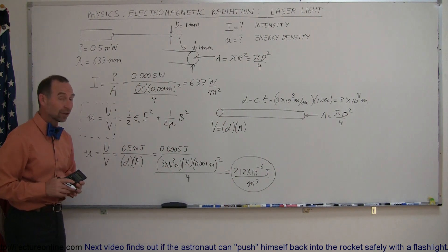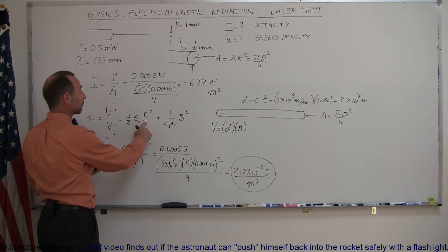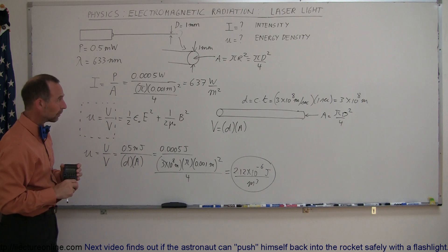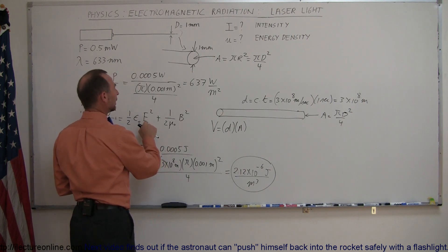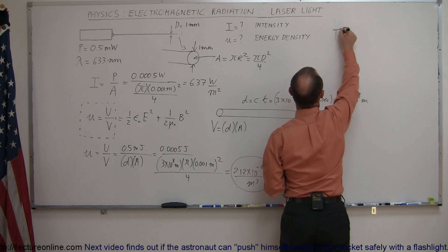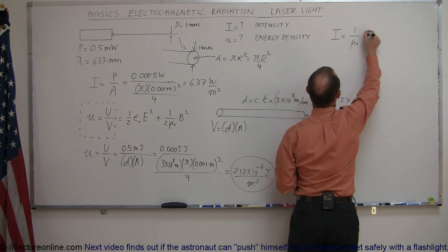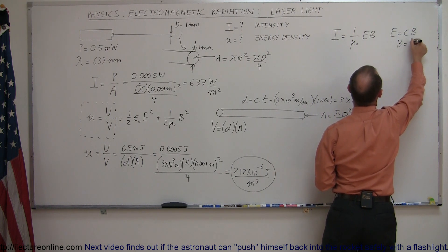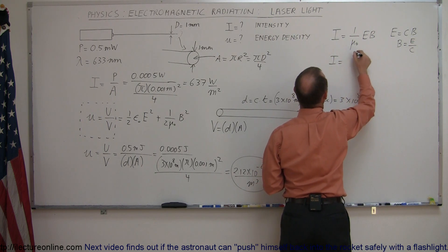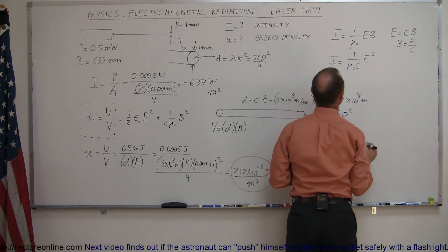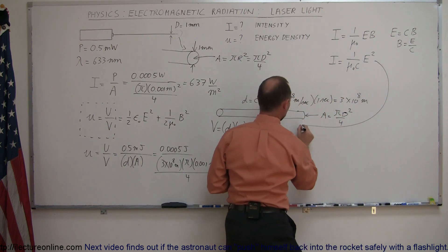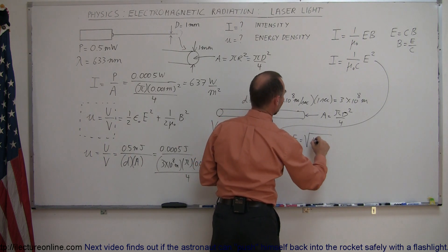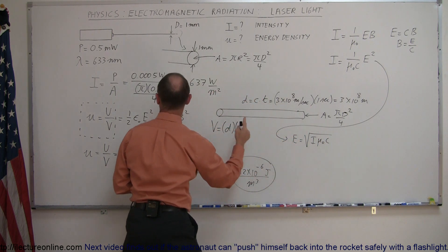That's how you calculate the energy density using the first method. You can also do it by calculating the electric or magnetic field oscillations and computing the energy density that way. Recalling that the intensity of the beam equals (1/μ₀)·E·B, and since E = cB, we get B = E/c. Therefore the intensity equals (1/μ₀)·E²/c, which simplifies to I = E²/(μ₀c). Solving for E: E equals the square root of I·μ₀·c.